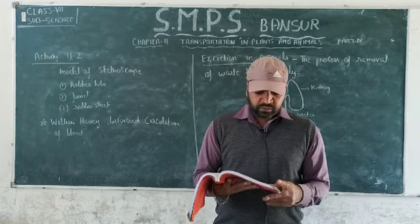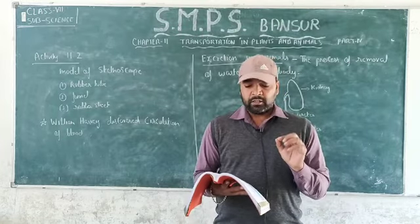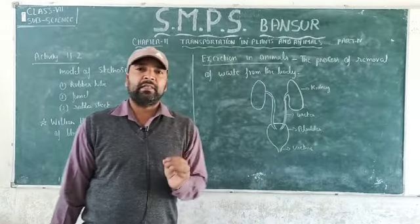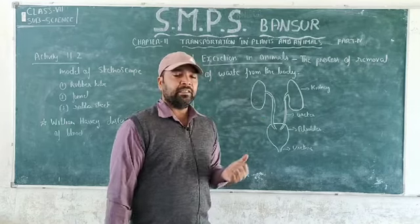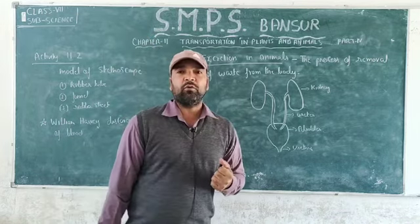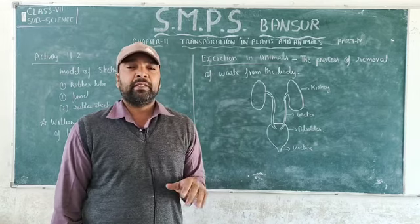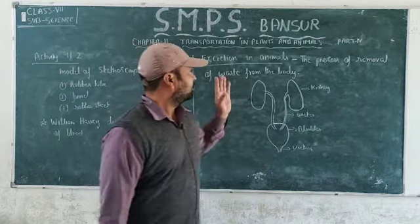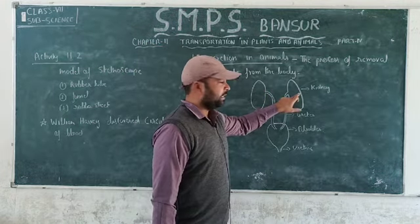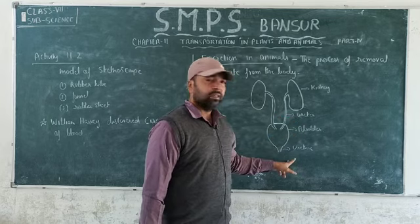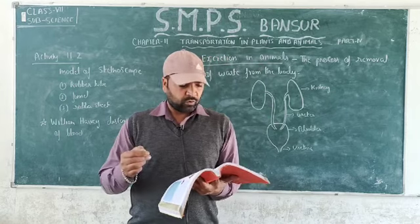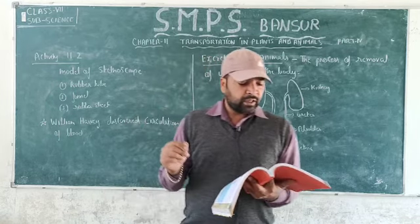Now, excretion in animals. Excretion basically means the process of removal of waste from the cells. Each and every cell needs energy; it gets energy, uses it, and some waste products are produced that must be removed from the body, because if they accumulate they may become poisonous and harm the body. The human excretory system consists of two kidneys, one pair of ureters, one bladder, and a urethra — and this is common for all human beings, whether male or female.